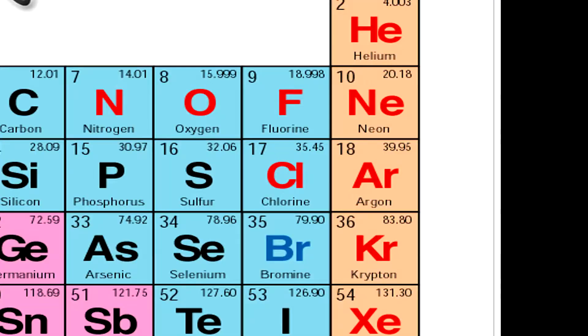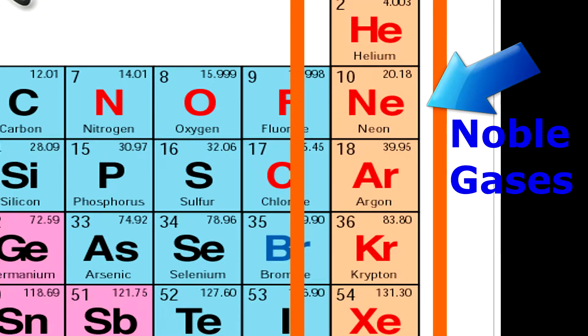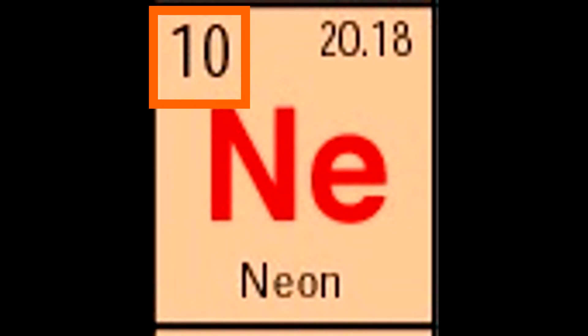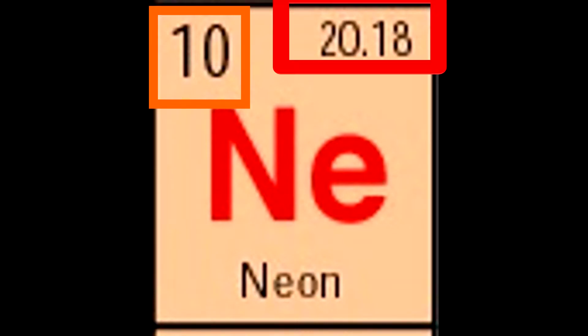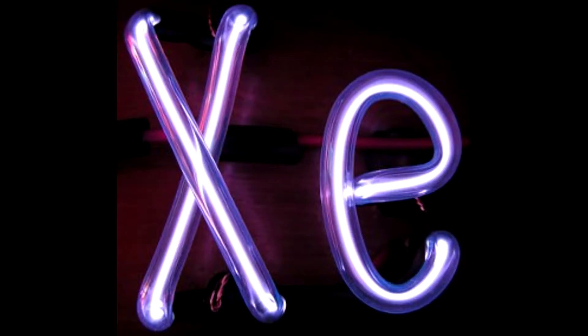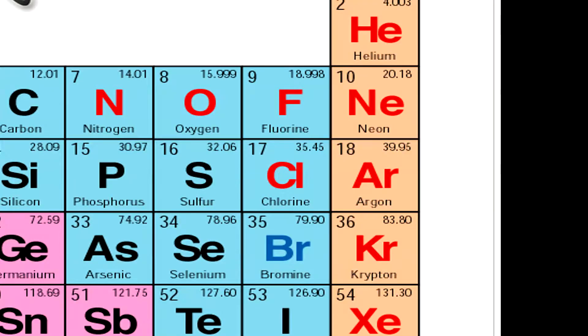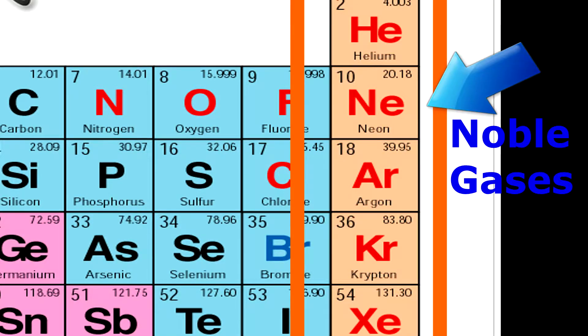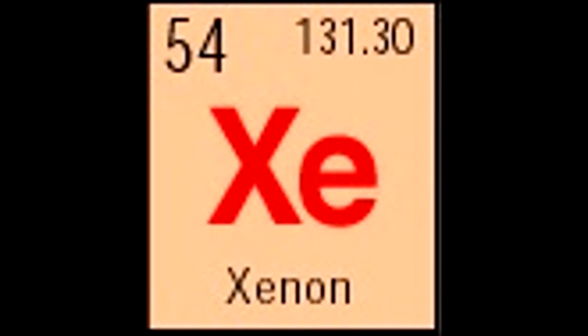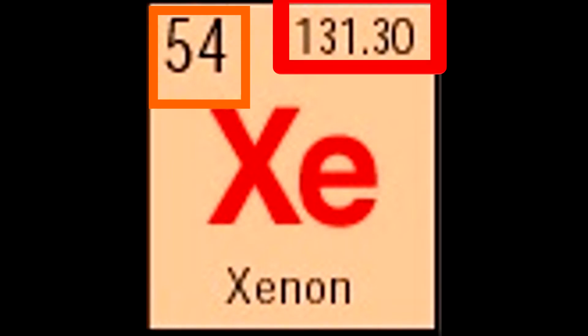Lastly, we have xenon, represented by the symbol Xe. Xenon is also a natural gas and a member of the noble gas family, with atomic number 54 and an atomic mass of 131.29 atomic mass units.